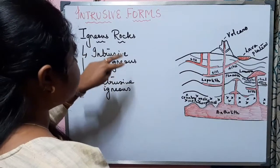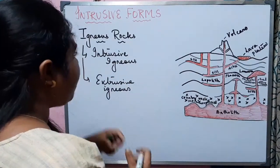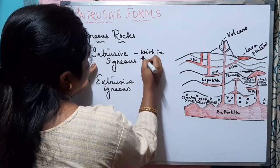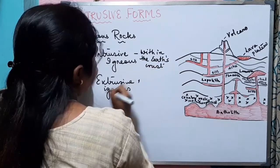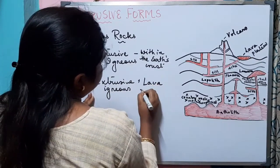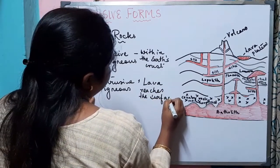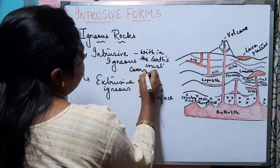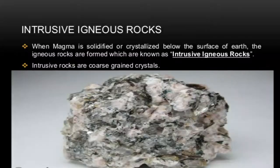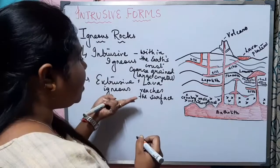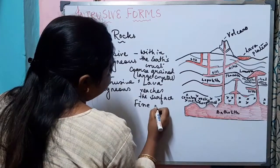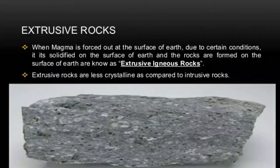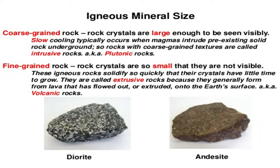Intrusive igneous rocks are those formed within the earth's crust due to the cooling and solidification of magma. Extrusive igneous rocks form when lava reaches the surface. In intrusive igneous rocks the magma cools down slowly, which is why these rocks are coarse-grained with large crystals. Extrusive igneous rocks cool very fast, so they are fine-grained with small crystals. Intrusive igneous rocks are also called plutonic rocks, and extrusive igneous rocks are called volcanic rocks.